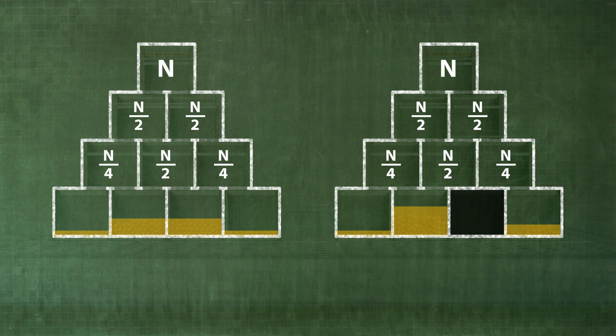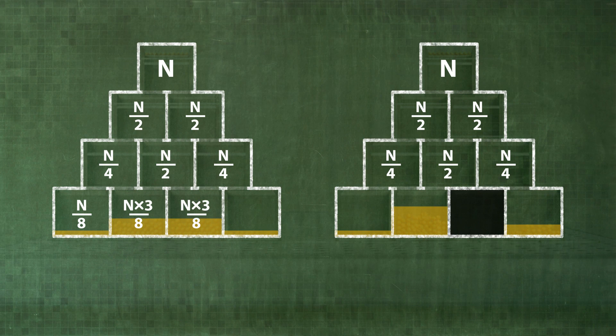For level 3, it is n eighths, 3 times n eighths, n eighths, n eighths for the left-hand pyramid.